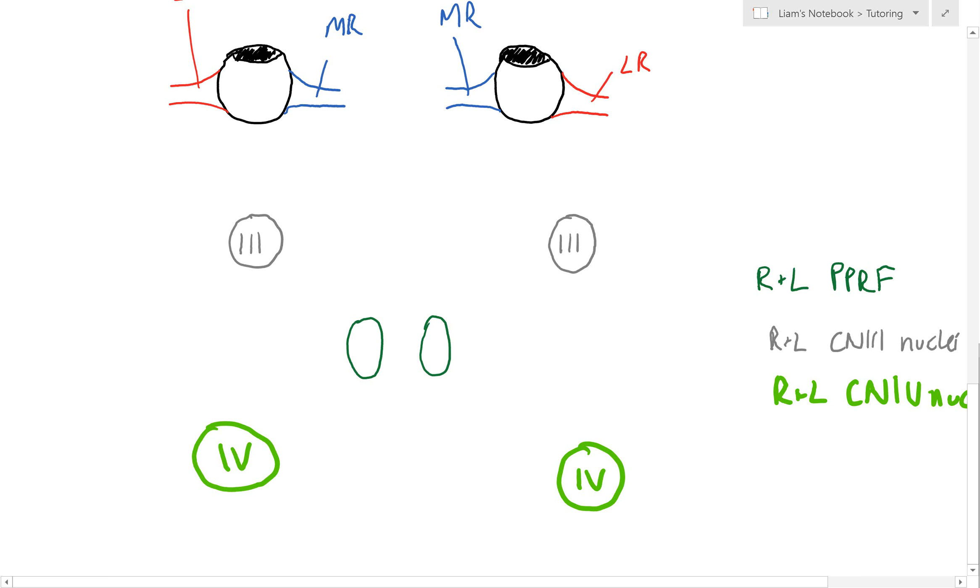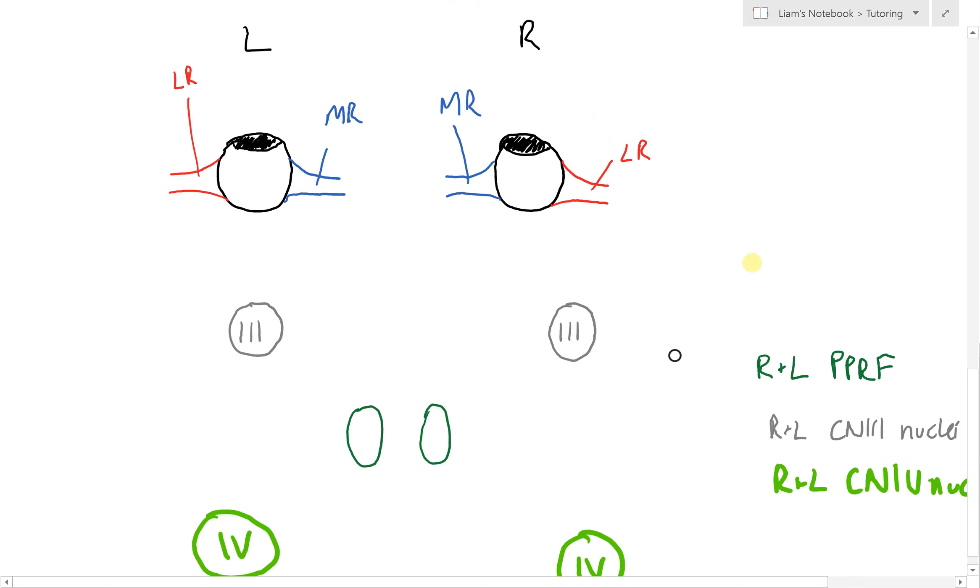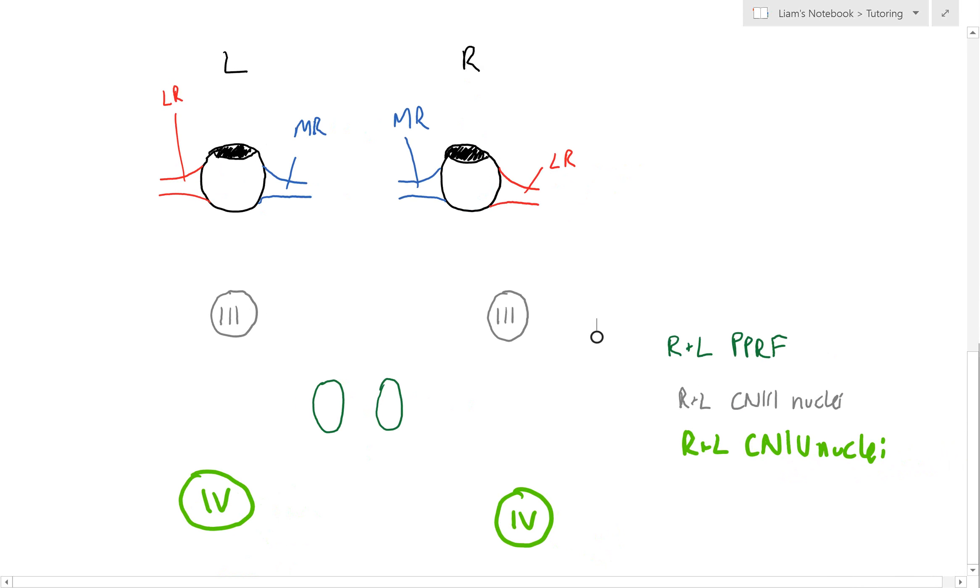Burst neurons can be inhibitory or excitatory. Left and right—in this example, we want our eyes to turn to the left, following the cursor over to this direction. This is a bird's eye view with our left PPRF and right PPRF. Green means activate.